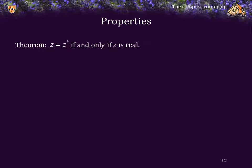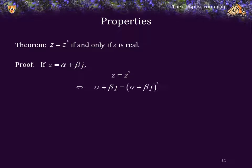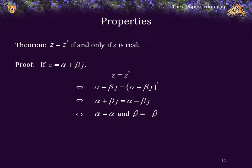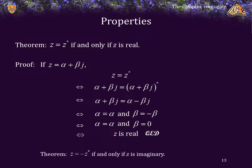Theorem: z equals z star if and only if z is real. Proof: Assume z equals alpha plus beta j. Then z equals z star if and only if alpha plus beta j equals the conjugate of alpha plus beta j, which is alpha minus beta j. Two complex numbers are equal if and only if their real and imaginary components are equal, so this requires alpha equals alpha (true) and beta equals negative beta. Beta equals negative beta requires 2 beta equals zero, so beta equals zero, meaning z must be real. You can also prove that z equals the negative of z star if and only if z is imaginary.